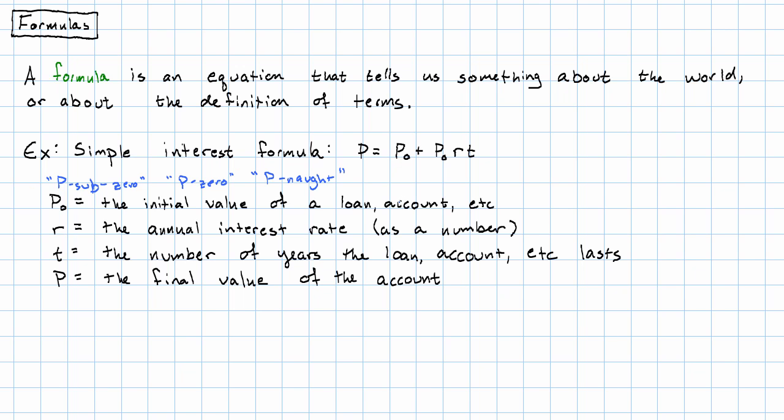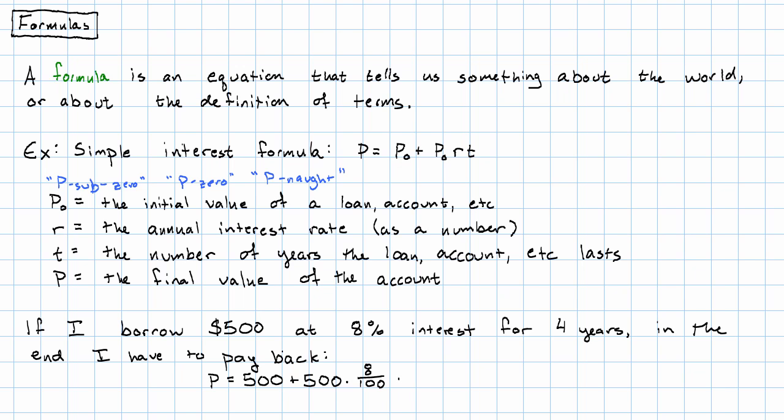So this is telling me that if I borrow $500 at 8% interest for four years, in the end I have to pay back the final amount, which is the starting amount plus the starting amount times the interest rate as a number, so 8% times the number of years, that's four.